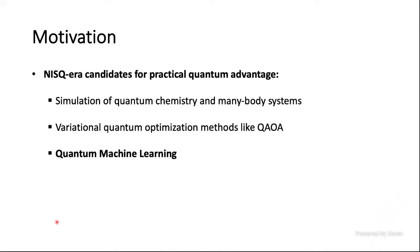Since we cannot run proven quantum algorithms like Shor's algorithm or Grover's search algorithm, we have to come up with algorithms specifically designed for NISQ devices. Some of the best candidates for NISQ-era quantum advantage are simulation of quantum chemistry, simulation of many-body systems, variational quantum optimization methods like the QAOA algorithm, and finally quantum machine learning, which I will talk more about.